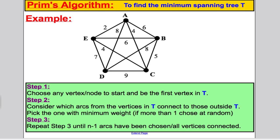Here's the example. I suggest you copy down Prim's algorithm. Step 1 says choose any vertex or node to start and let that be the first vertex of T. I'm going to start here at A. That's my first vertex of T. So T currently comprises of A.